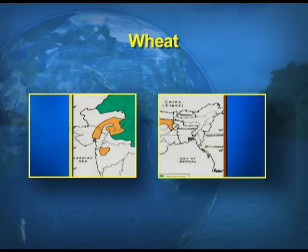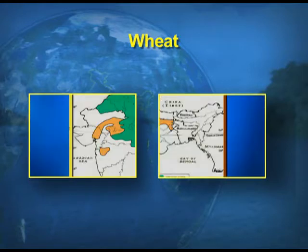On the screen you can see the map showing areas that produce wheat in India — northern India and the western part of India, including some parts of Rajasthan, Maharashtra, and Gujarat.